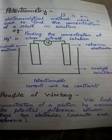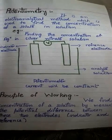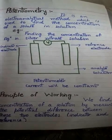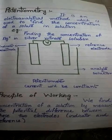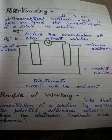For example, if you want to find out the concentration of silver ion in silver nitrate solution, with the help of potentiometry, we can easily find out the silver ion concentration.